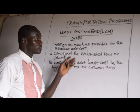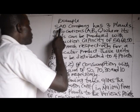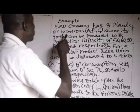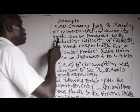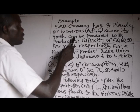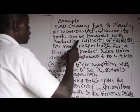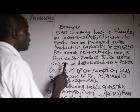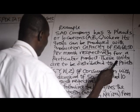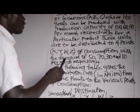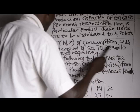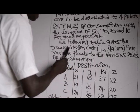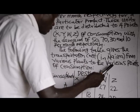I want to consider a worked example — the same question used under the North West Corner Rule. SAO Company has three plants or locations A, B, C, where goods can be produced with production capacity of 50, 60, and 50 per month respectively. These units are to be distributed to four consumption points X, Y, W, Z with demand of 50, 70, 30, and 10 per month respectively.